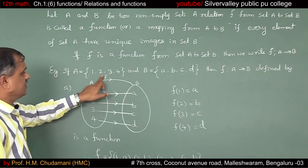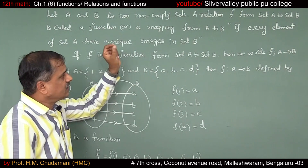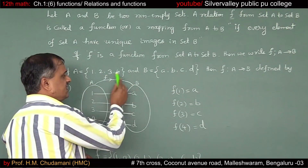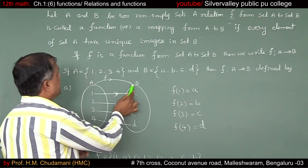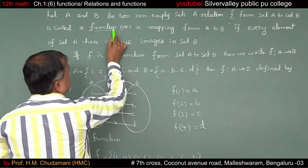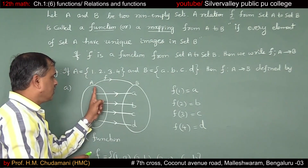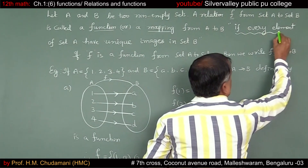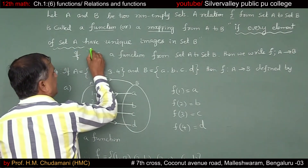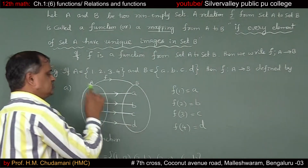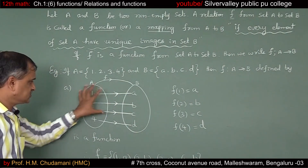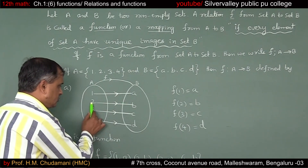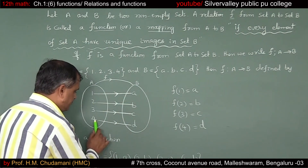Let A and B be two non-empty sets. A relation F from set A to set B is called a function or a mapping from A to set B if every element of set A has a unique image in set B. That is why this is an example of a function. So F = {(1,A), (2,B), (3,C), (4,D)}.